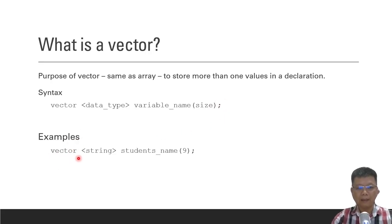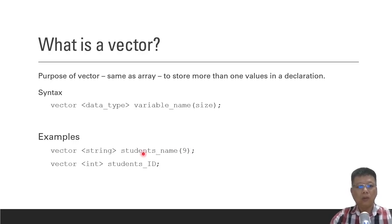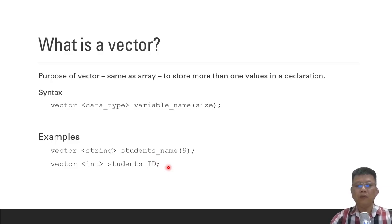For example, vector string — when we declare data type string, this variable is called student's name. If you know the size or want to initialize the size of the vector, you can put a value like 9, so 9 spaces will be inserted in the vector as 0. For vector integer, we declare with data type integer and the name student ID, which means no value is put in the vector itself.